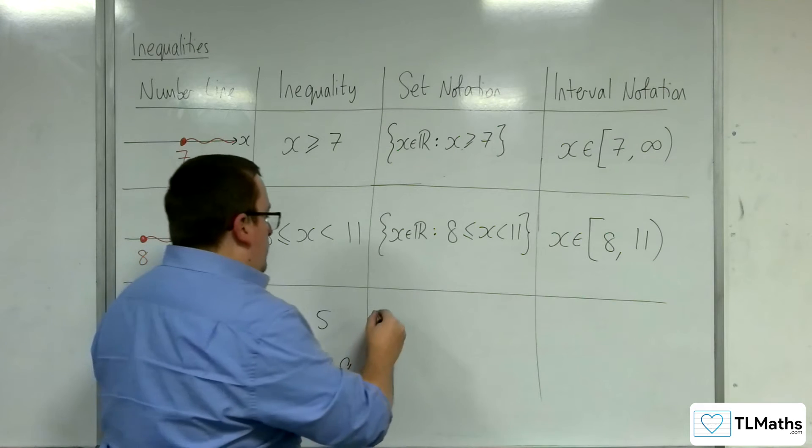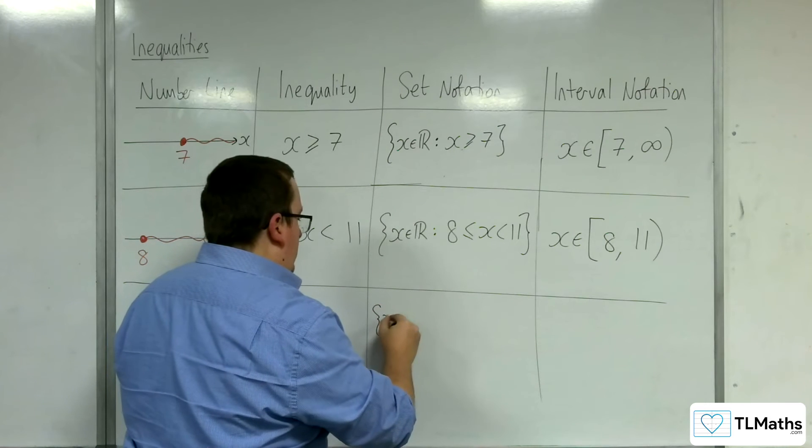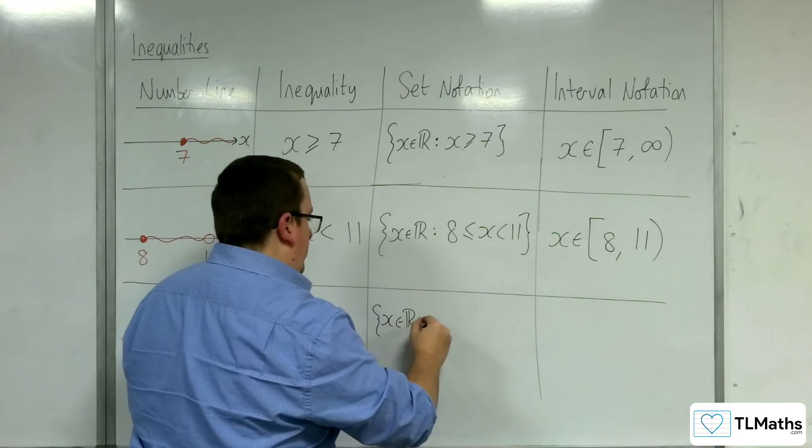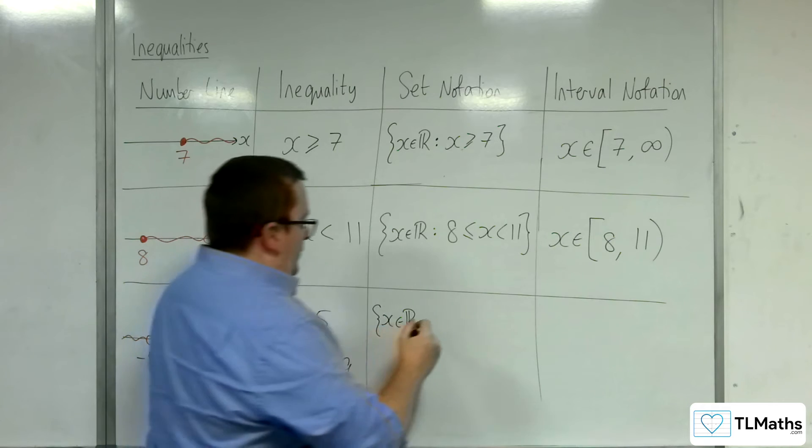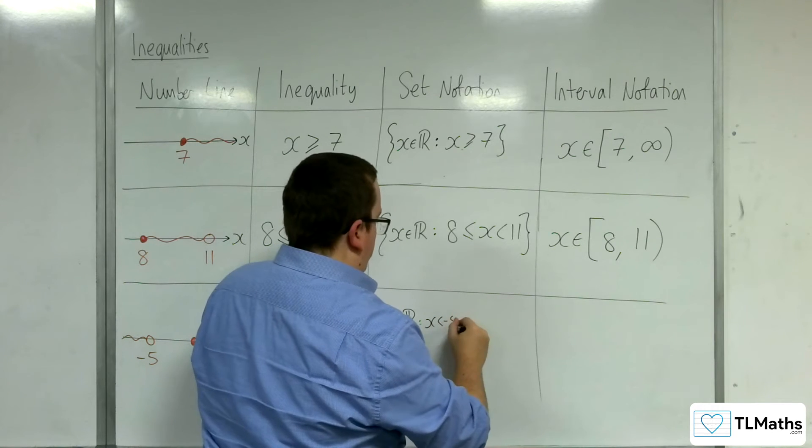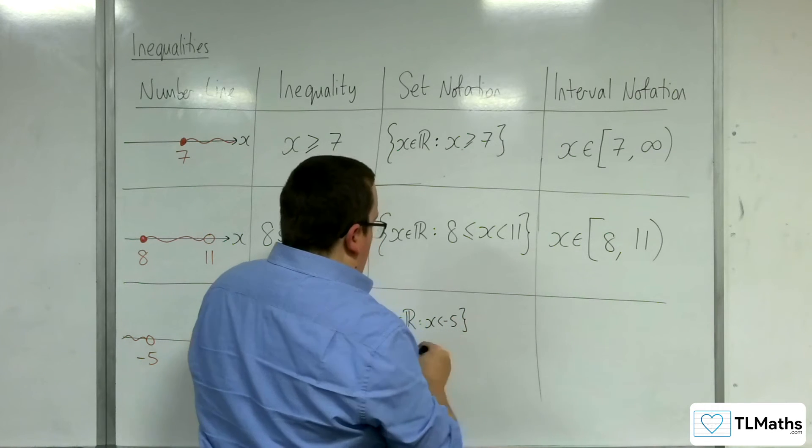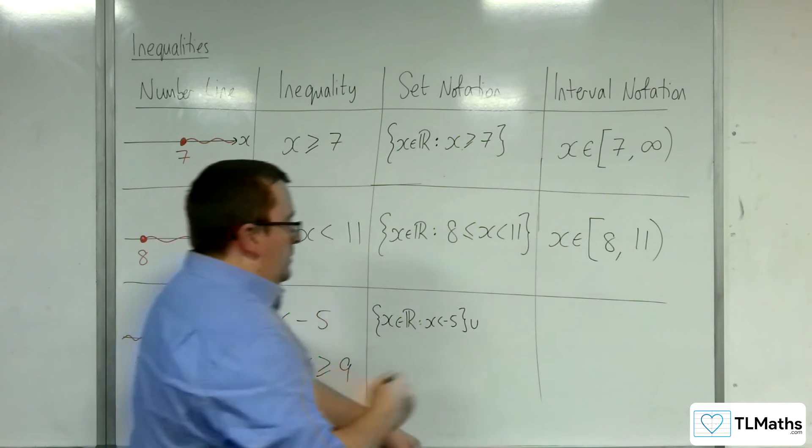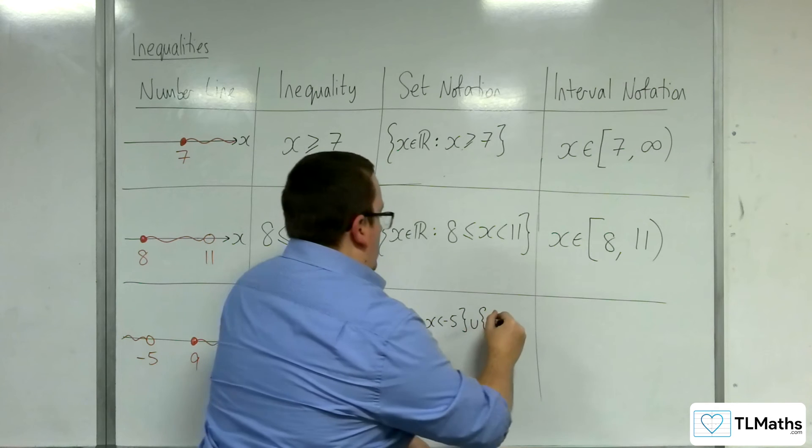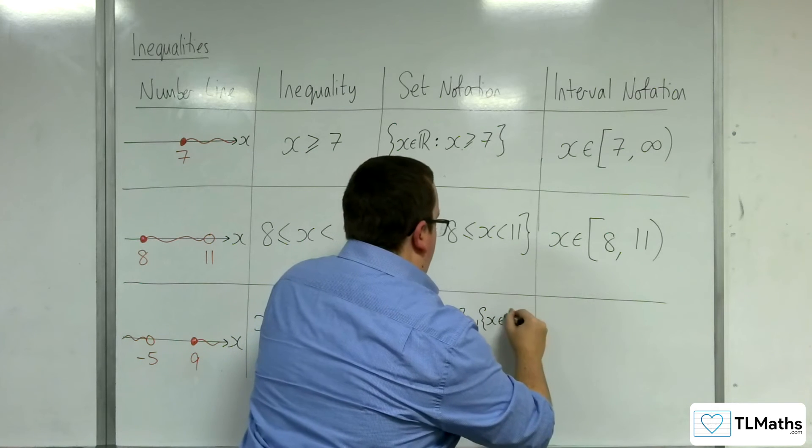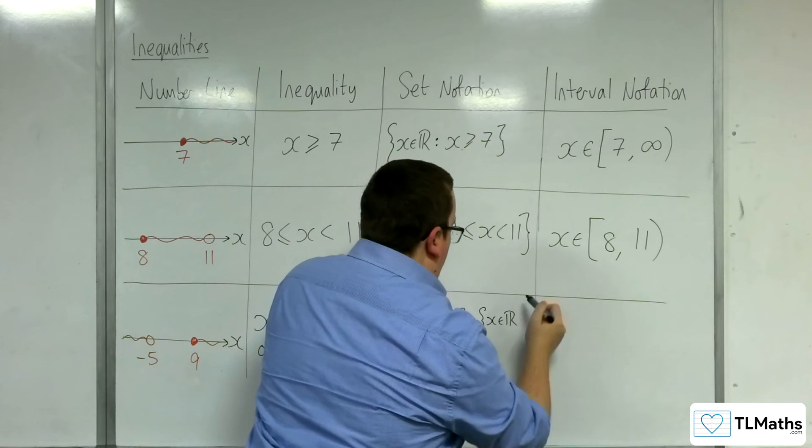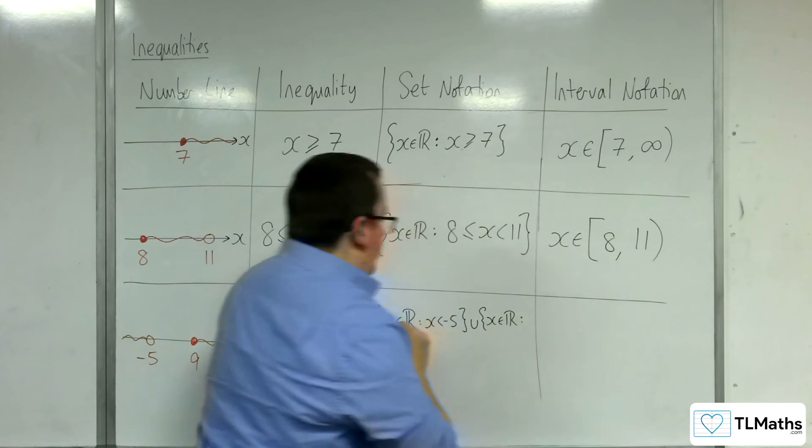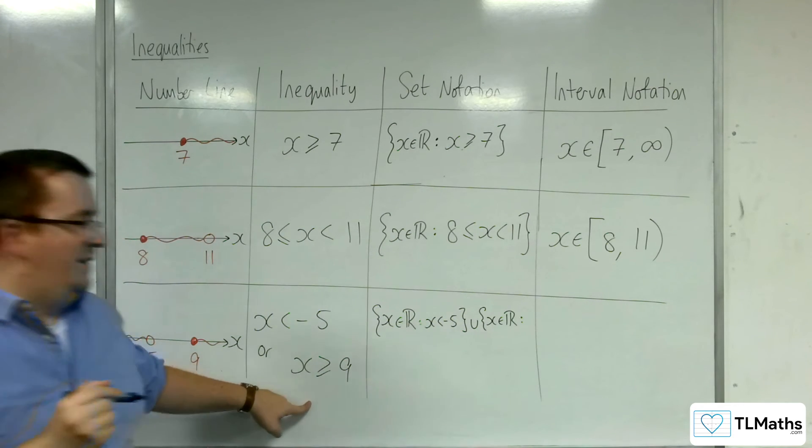Now in set notation, we would write that as x belongs to the real numbers, such that x is less than minus 5. And then we would have the union. I don't know if I'm going to fit this onto one line, so I think I'm going to go into a separate box. Such that x is greater than or equal to 9.